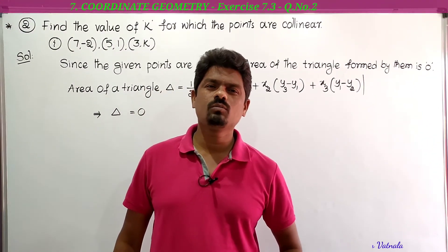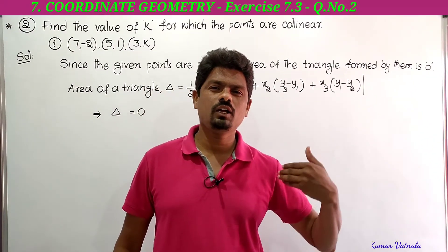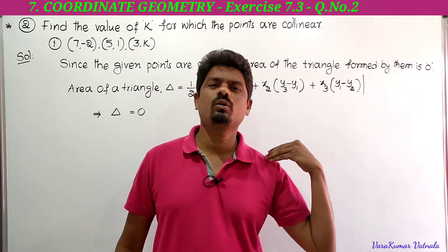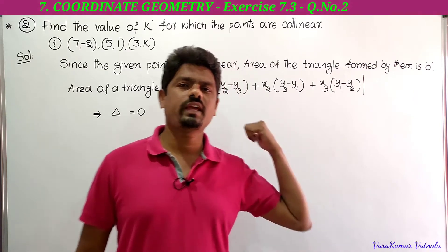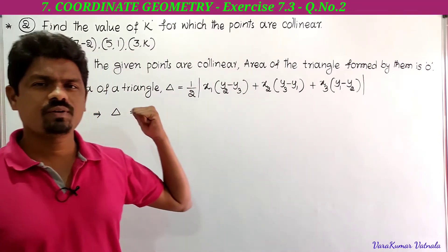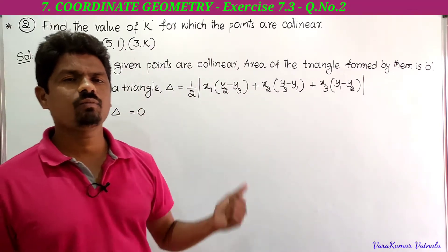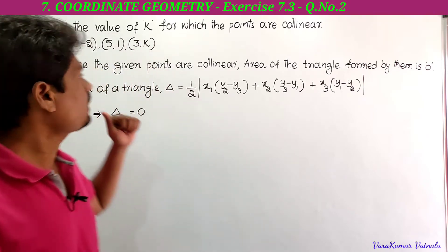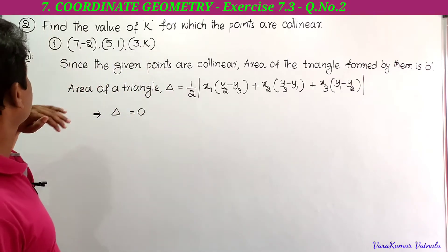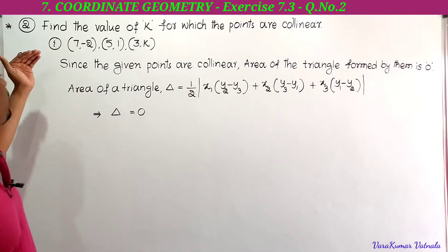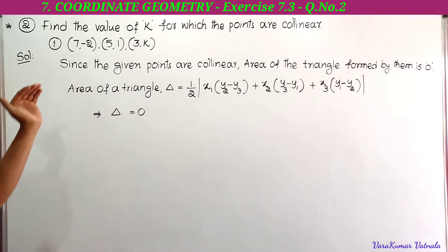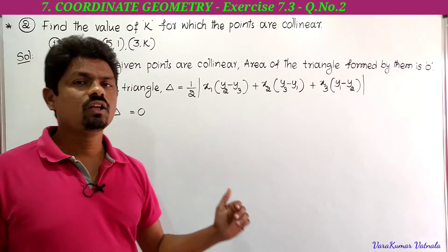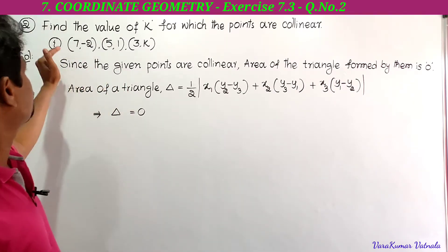Hi, hello, welcome to our channel Learn More Maths. Today we are going to solve the second problem from exercise 7.3. The question asks: find the value of k for which the given points are collinear.